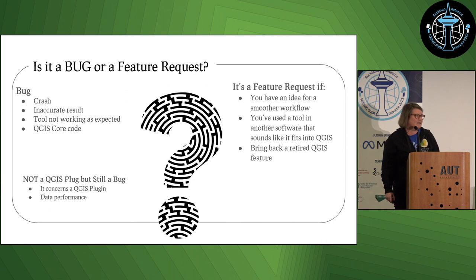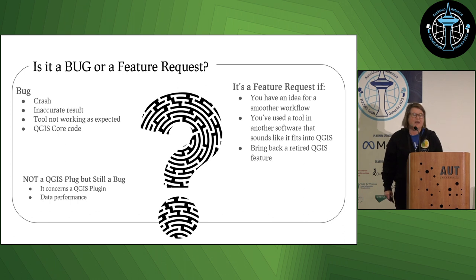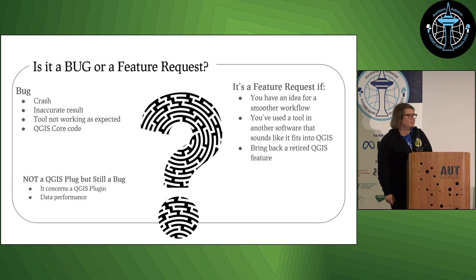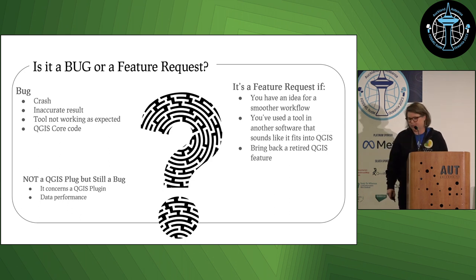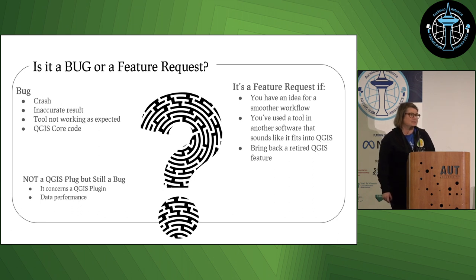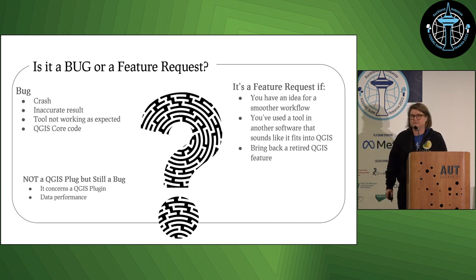A bug could provide you with an inaccurate result or cause incorrect functioning. What's not a QGIS core bug is something happening with a QGIS plugin — but you still follow this same process. If it's to do with data, go talk to the data custodian. A feature request is essentially something that doesn't exist yet — you can still put it in QGIS issues and follow the same process.